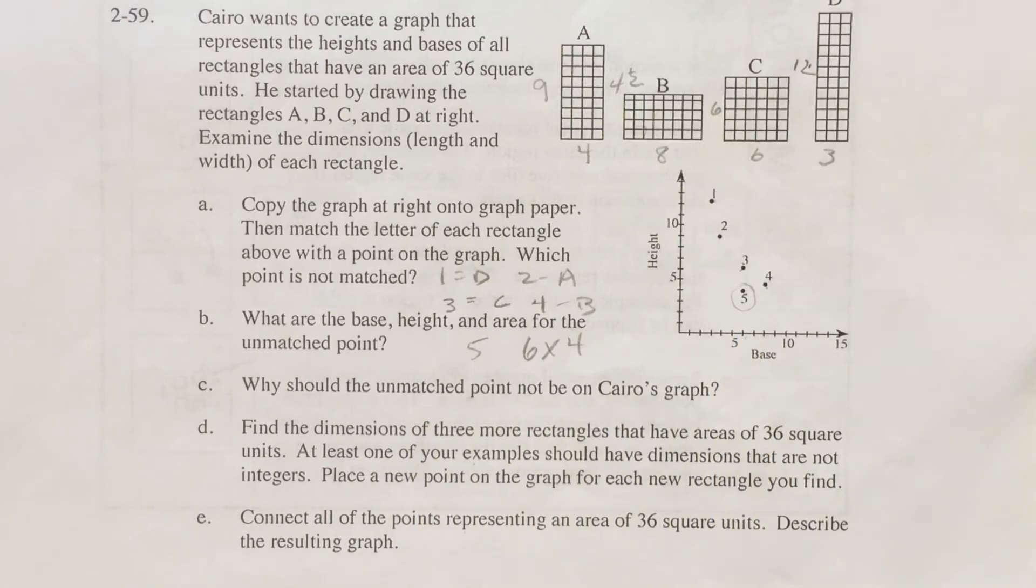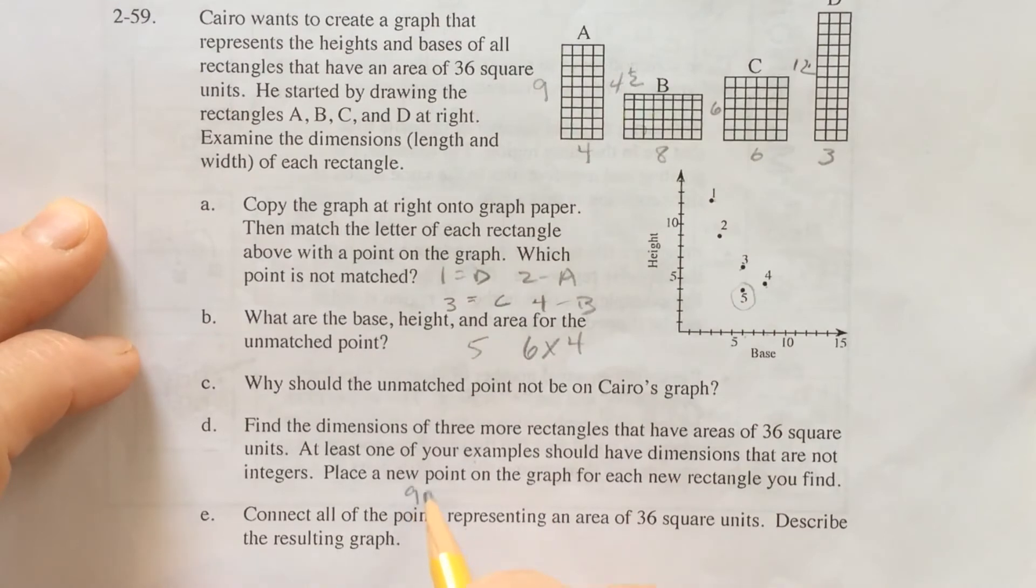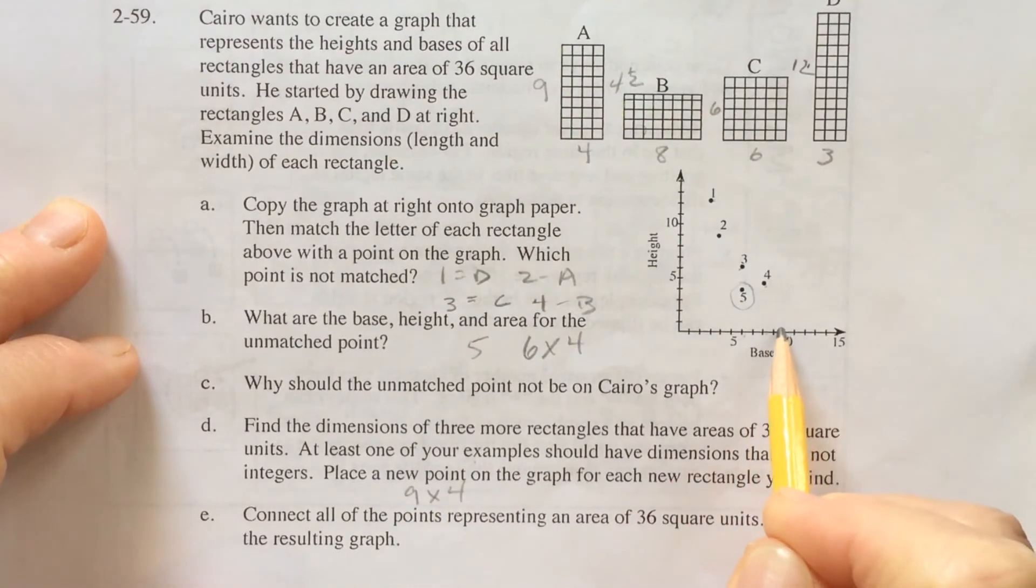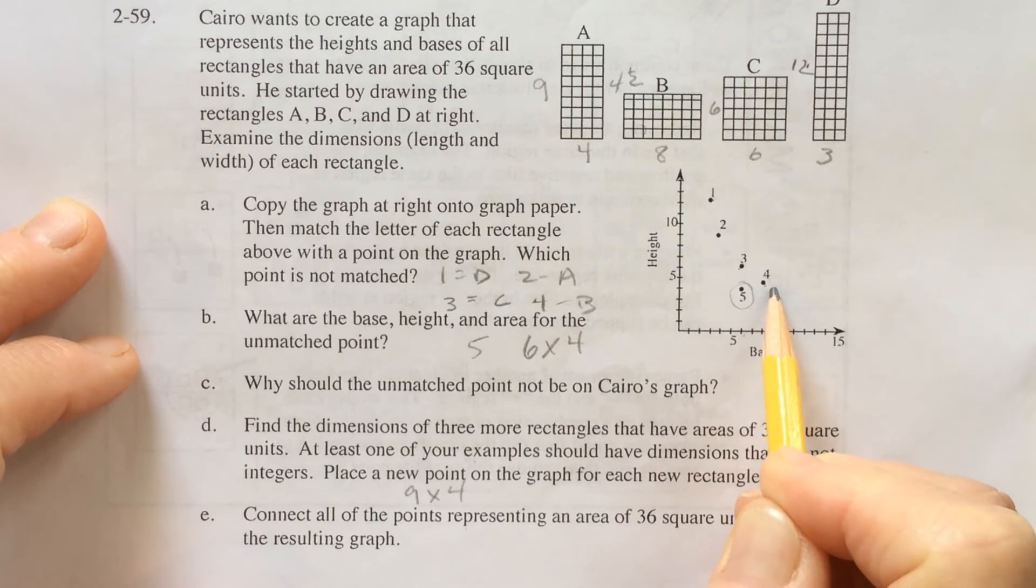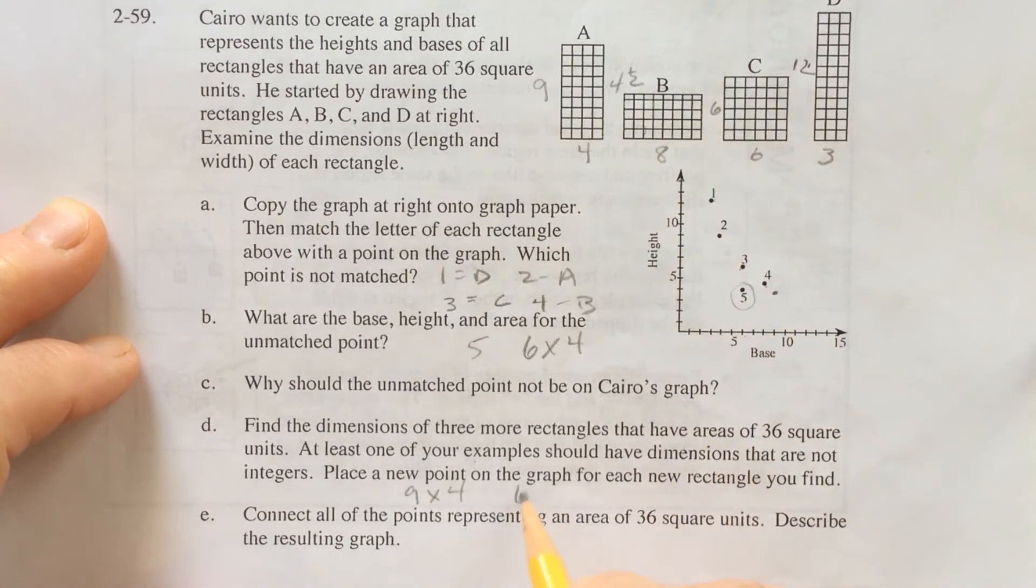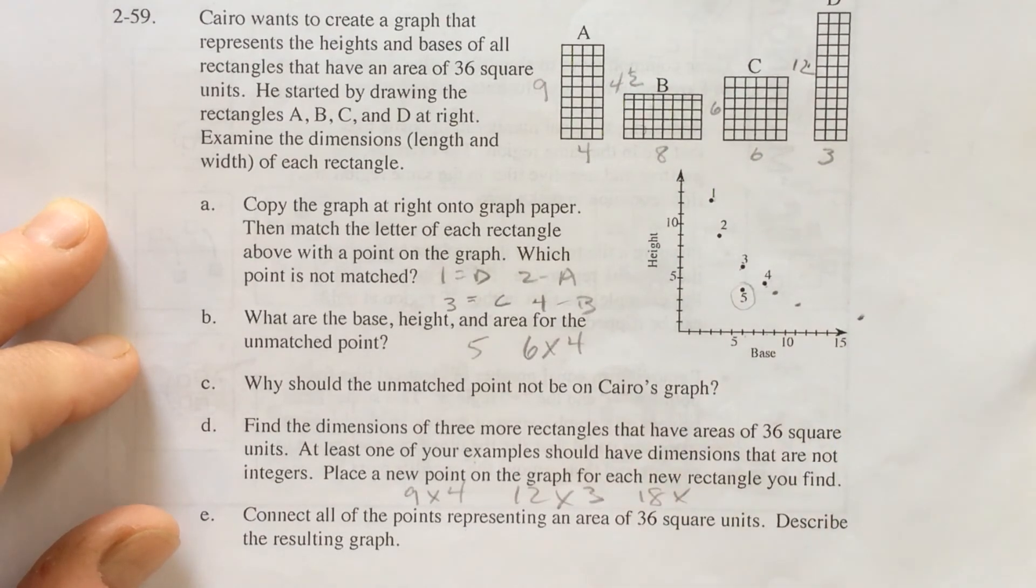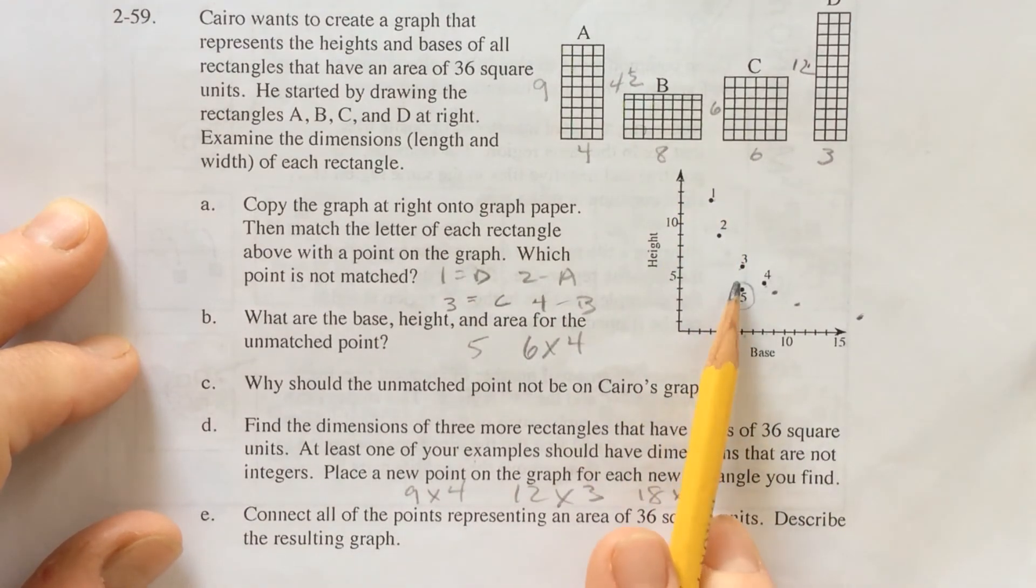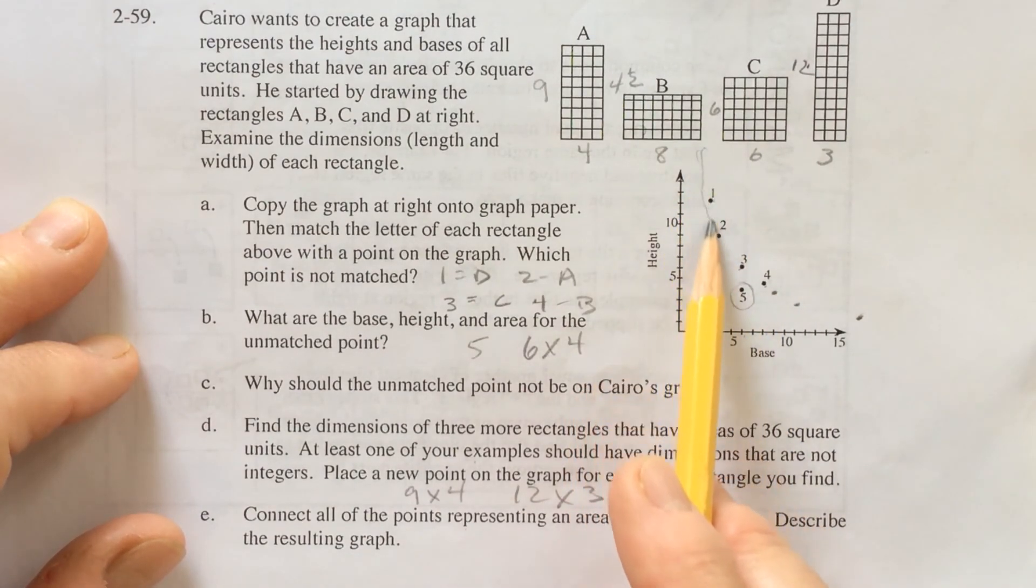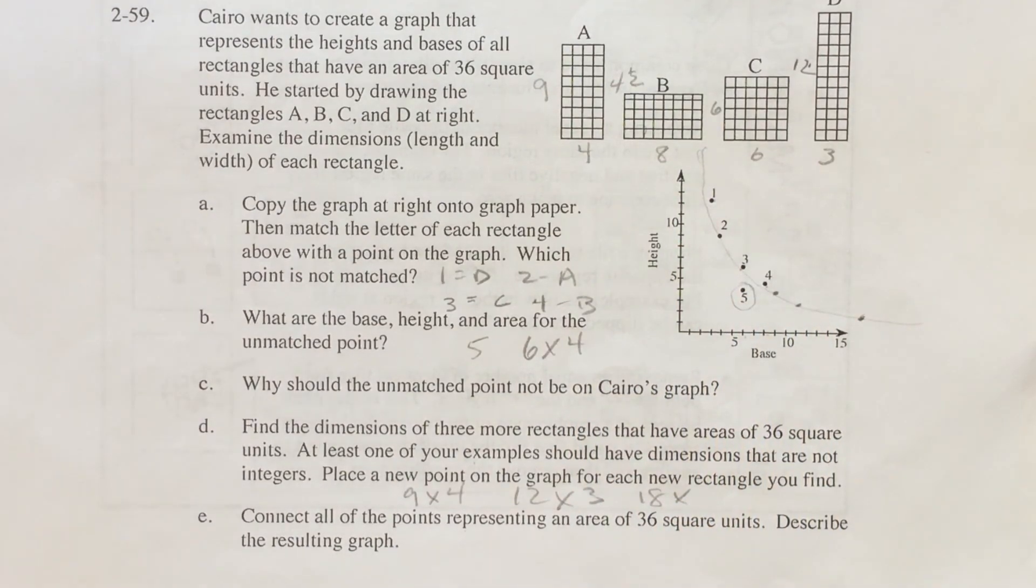Let's find some more rectangles that have an area of 36. 9 by 4 would be right in here. 12 by 3 is going to be right in here. I could even do 18 by 2, which would be out here. And it makes an interesting graph. If you ignore point 5, which doesn't belong, all these points make this nice curve.